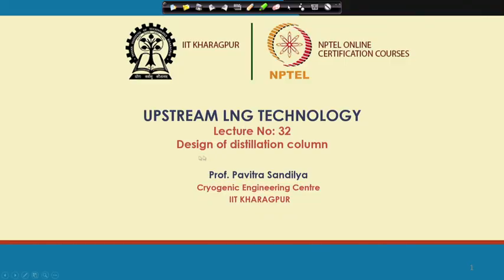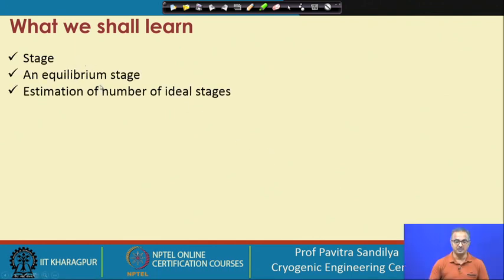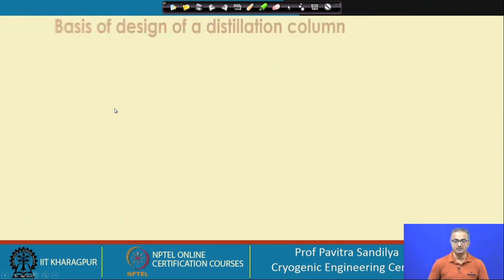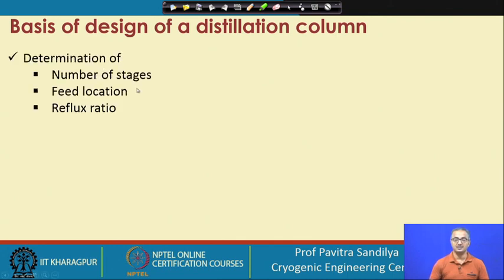Welcome. After learning about distillation and its construction, now let us go to understand some of the basics of the analysis of distillation columns for design purpose. In this particular lecture, we shall be looking into the design of distillation columns. We shall learn about the equilibrium stages and the estimation of the number of stages. The basis of the design for these columns is that we determine the number of stages, the location of the feed to the column, and the reflux ratio.